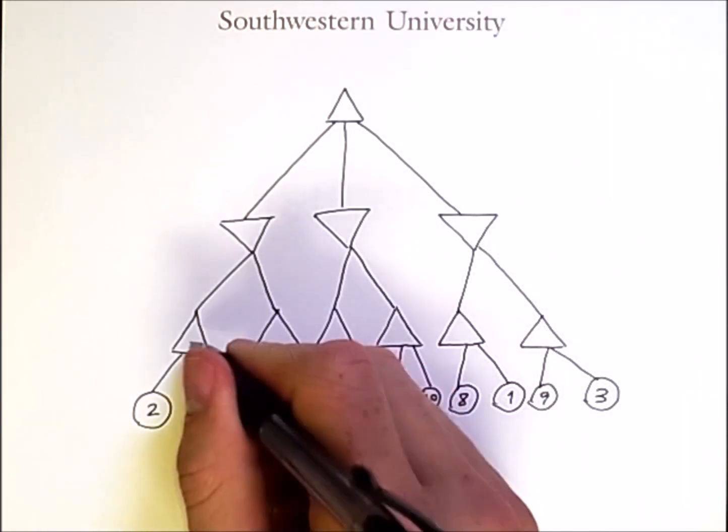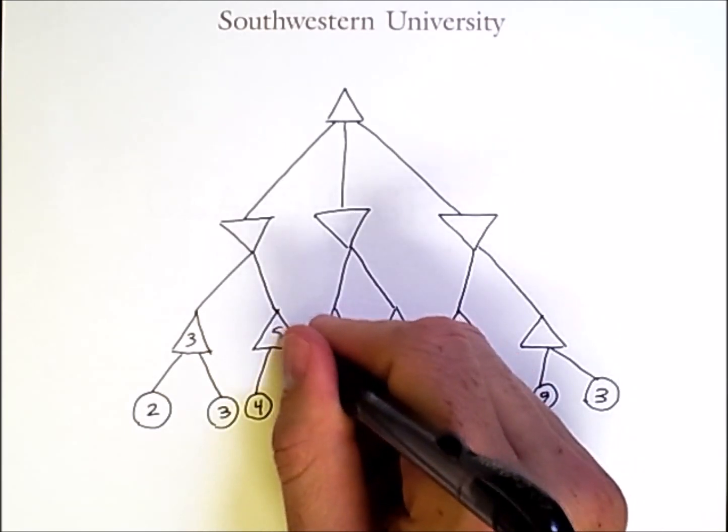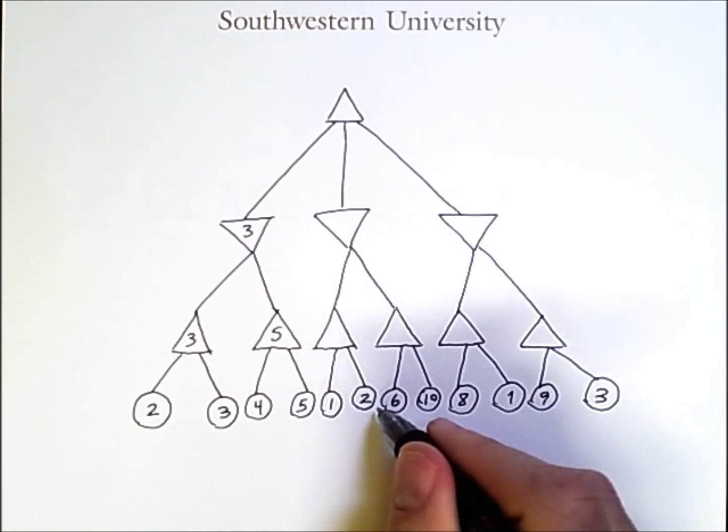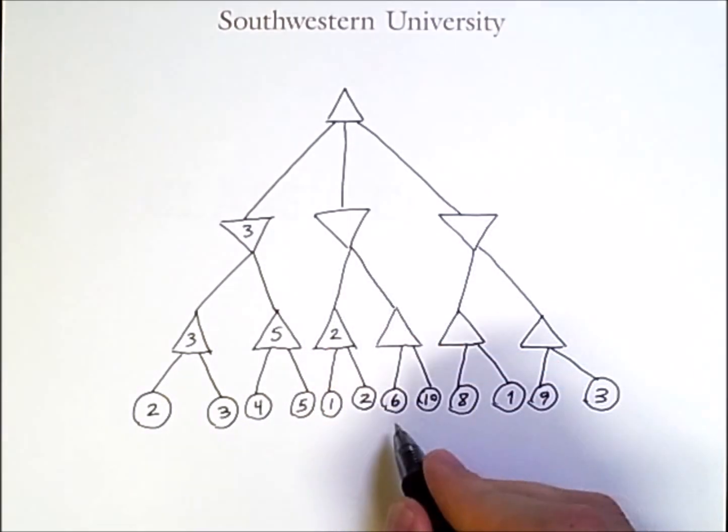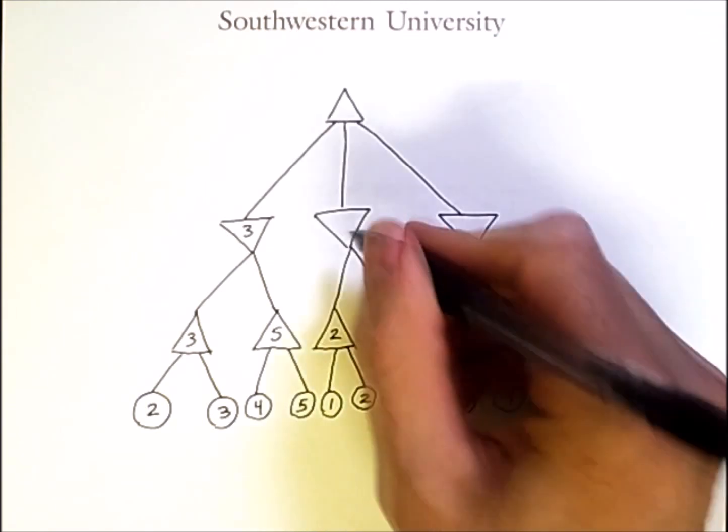Between 2 and 3, the max is 3. Between 4 and 5, the max is 5. The minimum across those is 3. The max across 1 and 2 is 2. The max across 6 and 10 is 10. The minimum across these is 2.